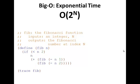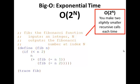The last one is exponential. It takes in the value n and returns the Fibonacci number at that index. Here you make two slightly smaller recursive calls each time. Factorial made one slightly smaller recursive call each time. This one makes two slightly smaller recursive calls each time, so it's going to branch out.